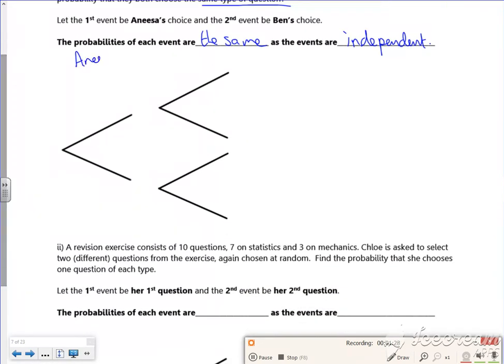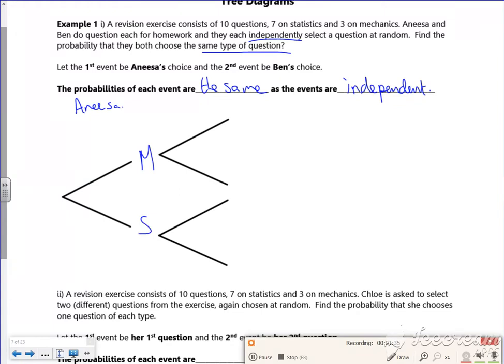So Anissa is the first one. She can choose a question on mechanics or a question on stats, and that mechanics is 3 out of 10, stats is 7 out of 10. So then Ben can do it as well. Mechanics, stats, mechanics, stats.